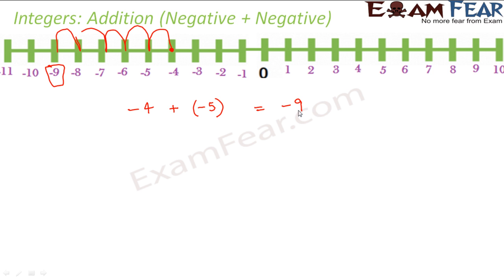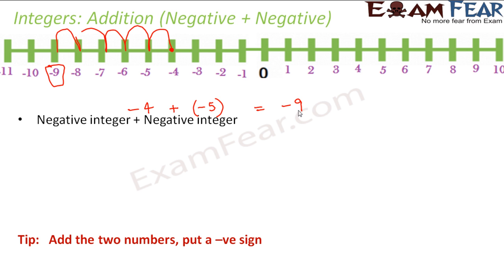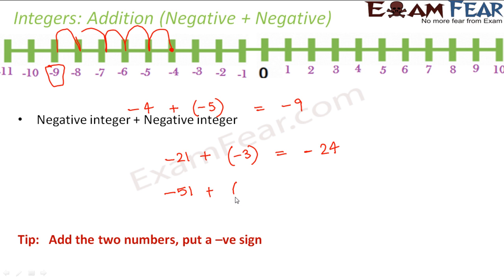So the result is minus 9. The tip here is: when both numbers are negative, add the two numbers and put a negative sign. For example, minus 21 plus minus 3 — since both are negative, add them: 21 plus 3 is 24, and put a negative sign. Similarly, minus 51 plus minus 1: 51 plus 1 is 52, and put a negative sign.